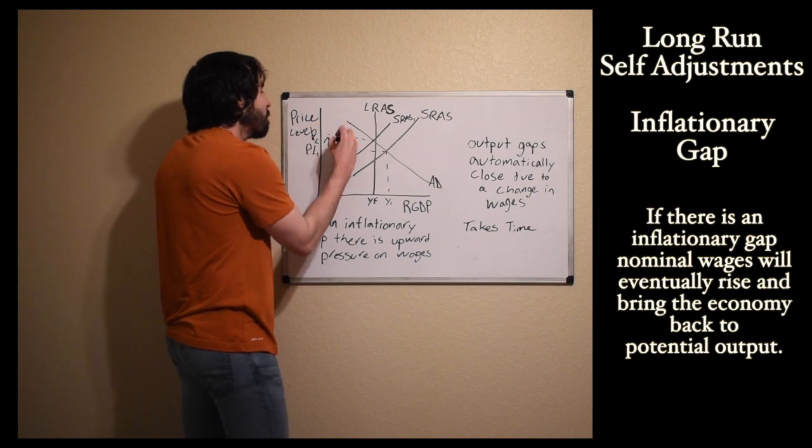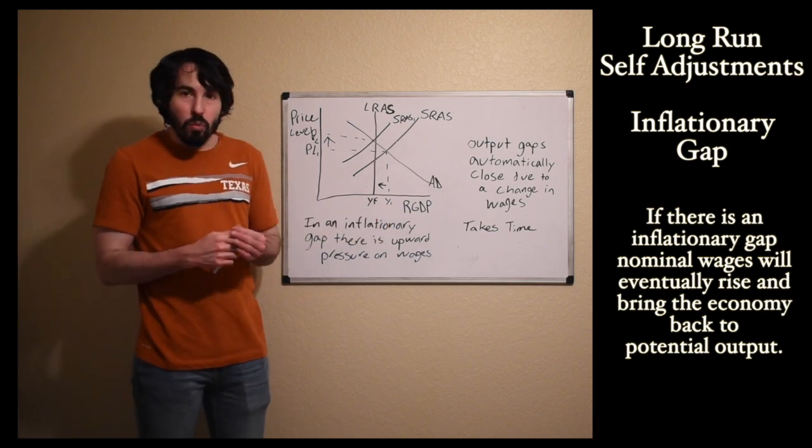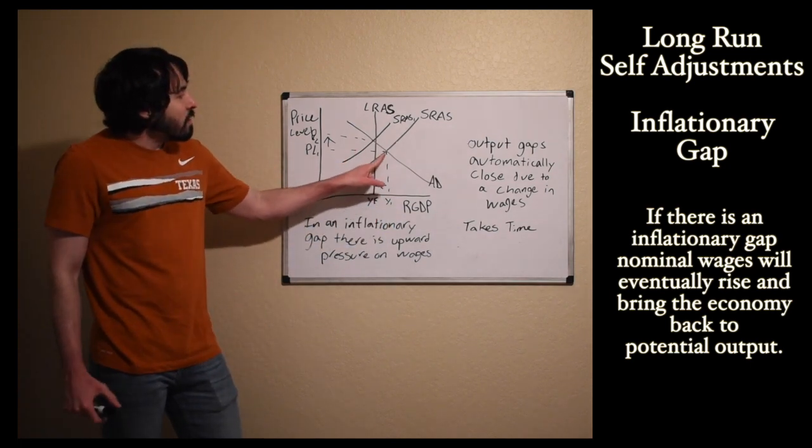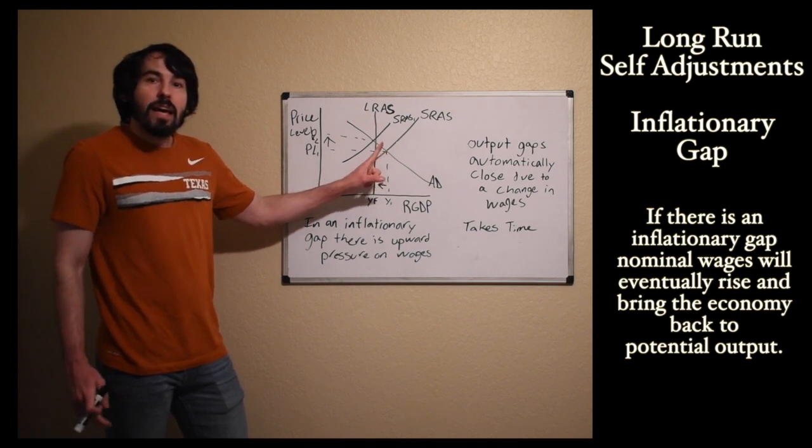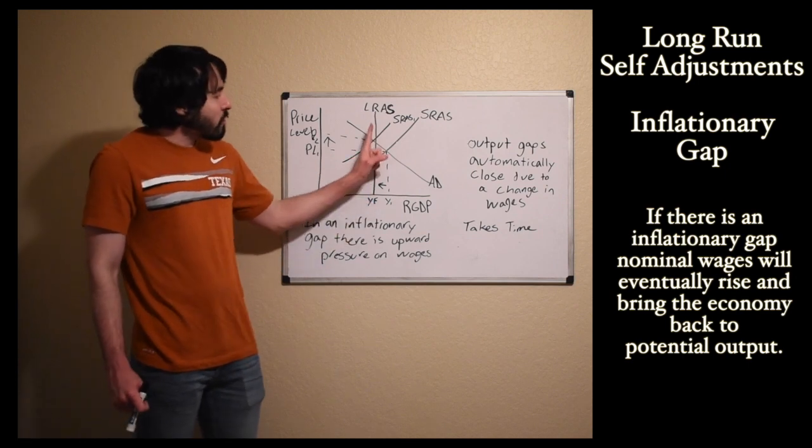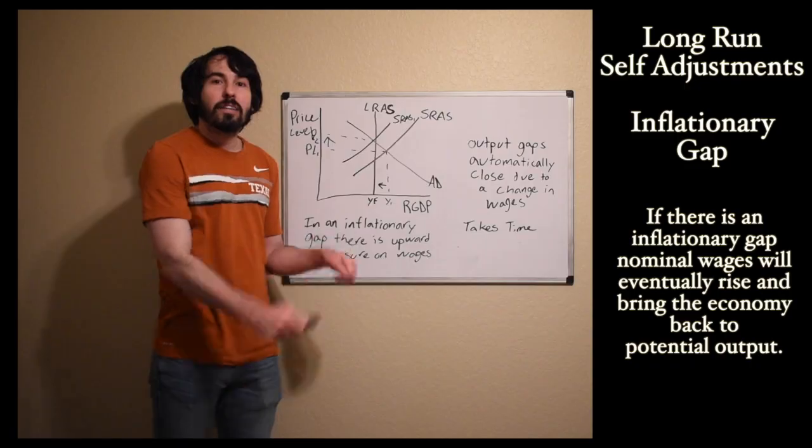So what happens is our price level goes up, our unemployment rate is going to go up as well as we move back to full employment output. And so it happens here: prices have gone up in the long run. However, we can always get back to full employment output because wages are fully flexible in the long run, and so wages will rise to meet that higher inflation.